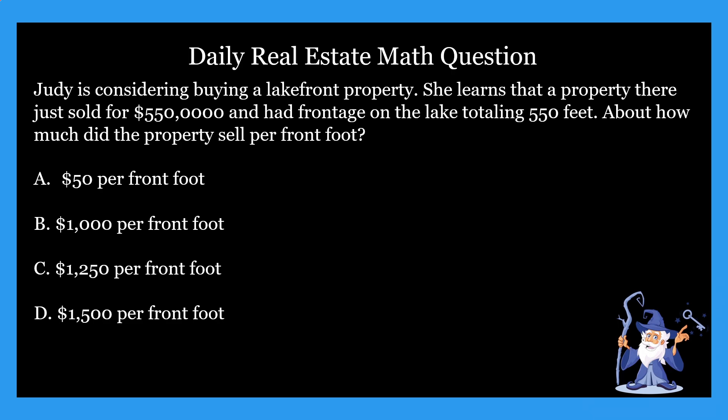Today's question is a little bit of a longer one, so buckle up and get ready. Yesterday we were covering front foot problems or front footage, and we're going to be doing more or less the same thing today. It says Judy is considering buying a lakefront property. She learns that a property there just sold for $550,000 and had frontage on the lake totaling 550 feet. About how much did the property sell for per front foot? The four options are $50, $1,000, $1,250, and $1,500 per front foot.